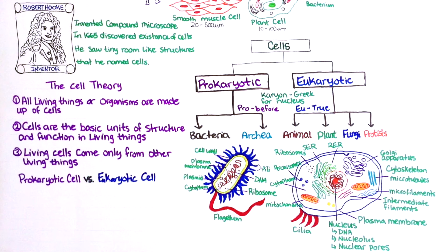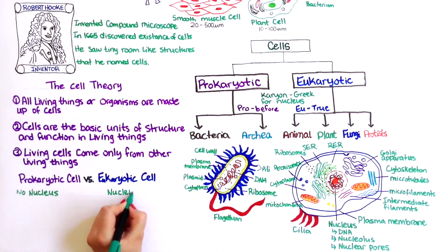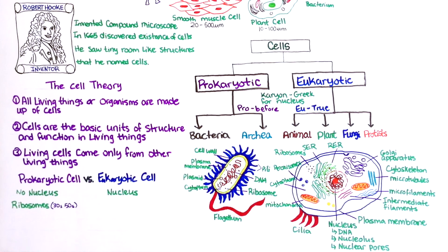First of all, prokaryotic cells lack a nucleus, while eukaryotic cells have a nucleus. Ribosomes are seen in both prokaryotic and eukaryotic cells; however, they are slightly different — in prokaryotes, the ribosome is made up of a 30S and a 50S subunit,